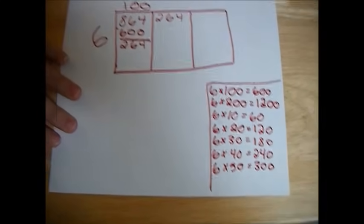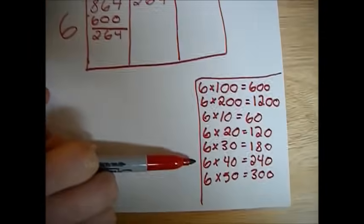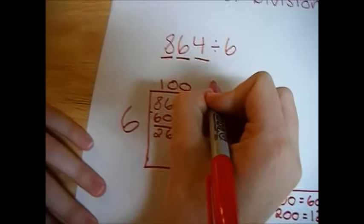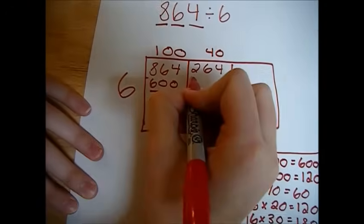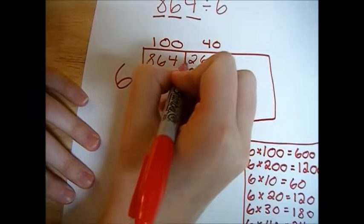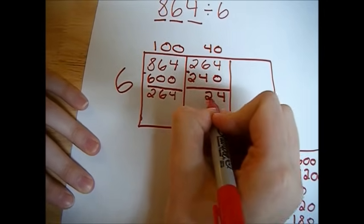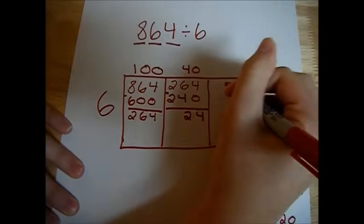And see, 300 is too high. So we know that 6 times 40 is what we need. We put 40 up top. 6 times 40 is 240. Then we subtract, which gives us 24, which we then move to the next box.